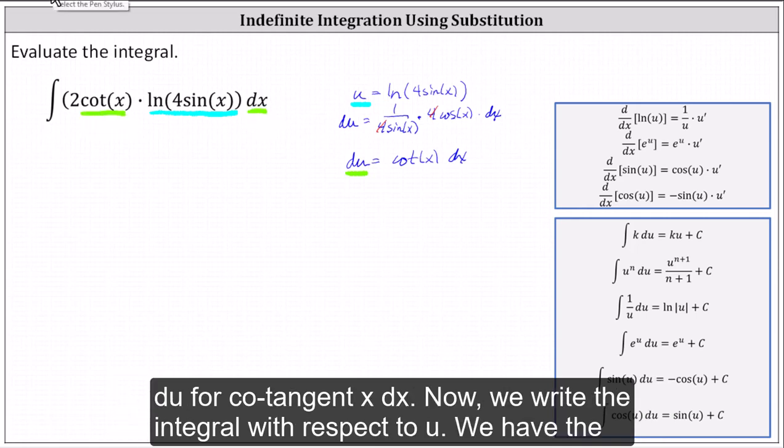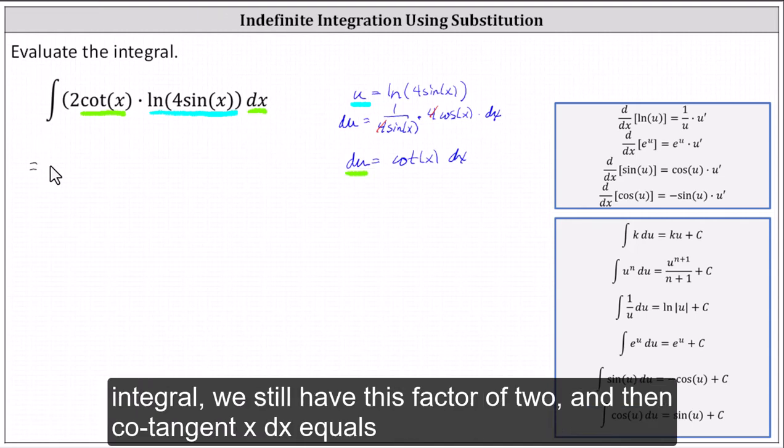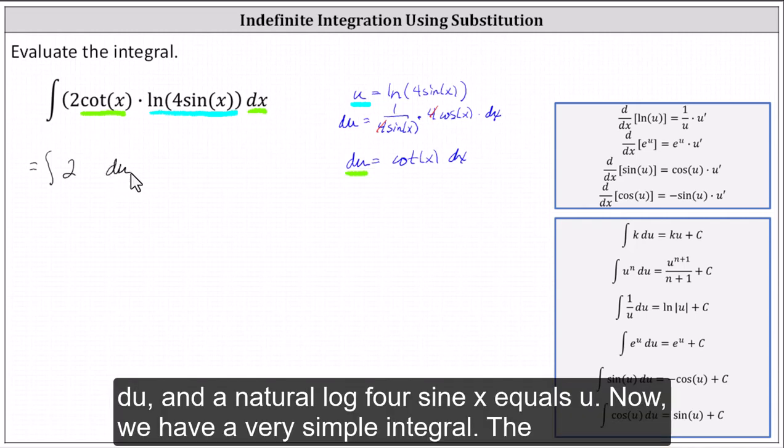And now we write the integral with respect to u. We have the integral of, we still have this factor of two, and then cotangent x dx equals du, and natural log four sine x equals u. Notice now we have a very simple integral.